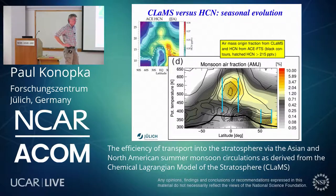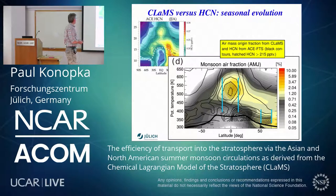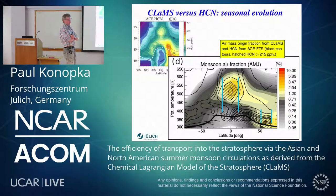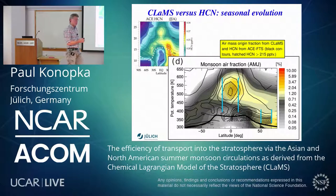Question: ENSO has a strong impact on the Hadley circulation — during El Niño the Hadley circulation tends to contract and strengthen, and in La Niña the opposite. Have you looked into the interannual variability in the tropical transport pathway? Answer: Not for this case — we only have four years. We do it normally in our 40-year calculations where all these variabilities are included, but not for this specific case.